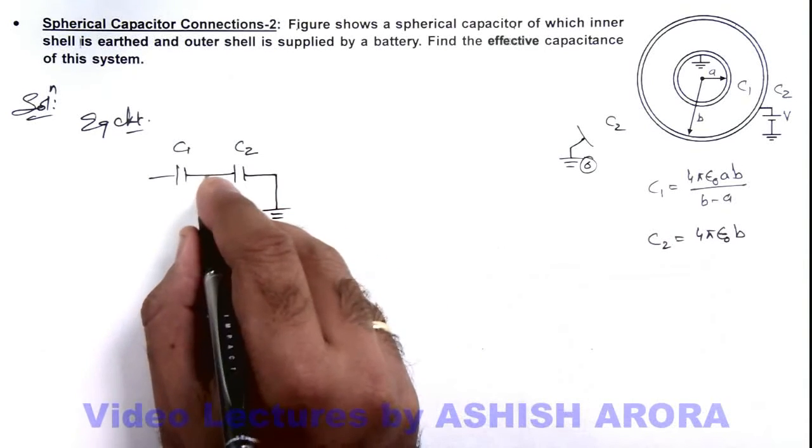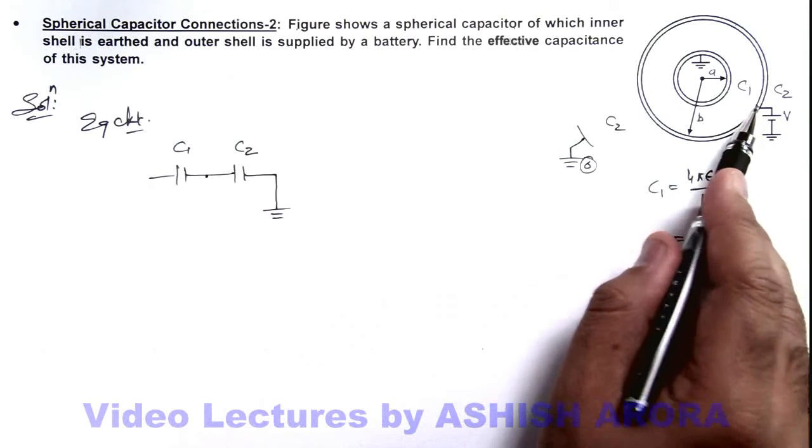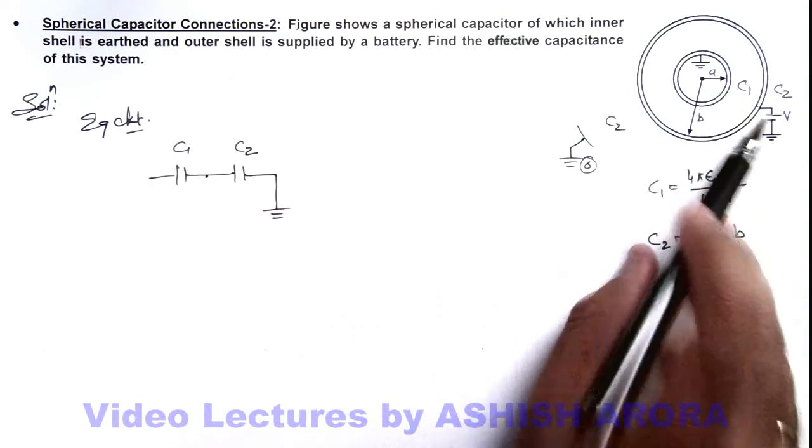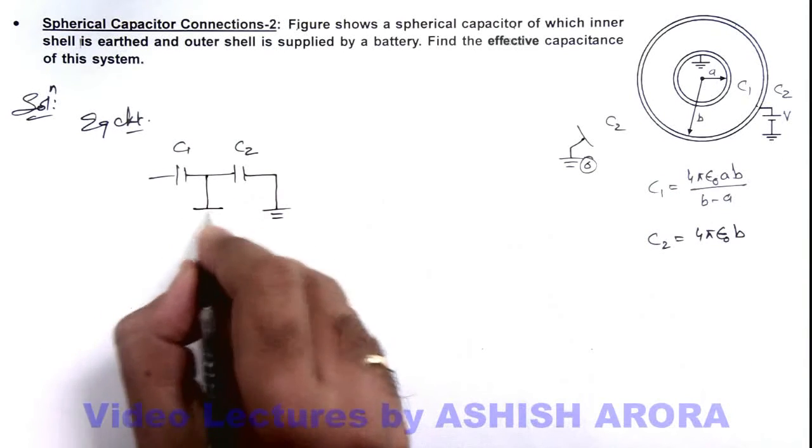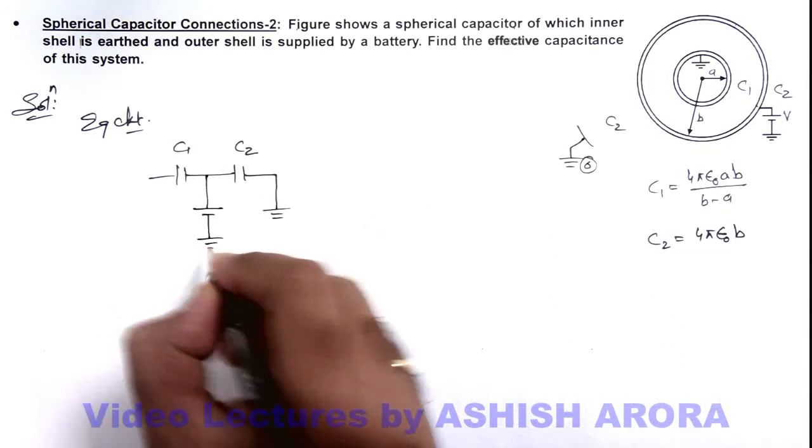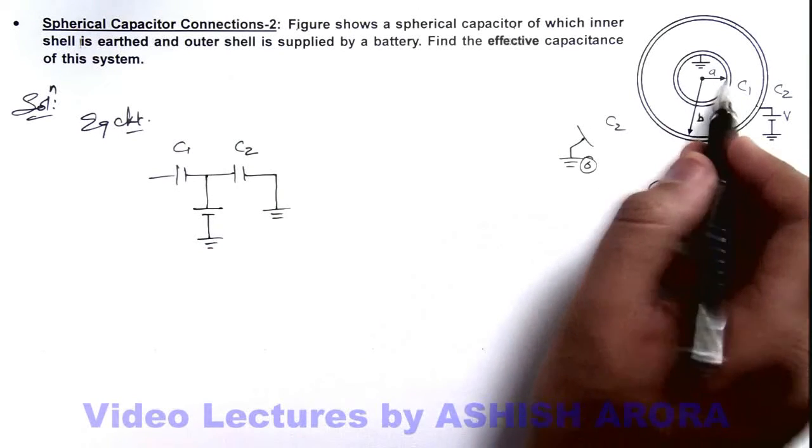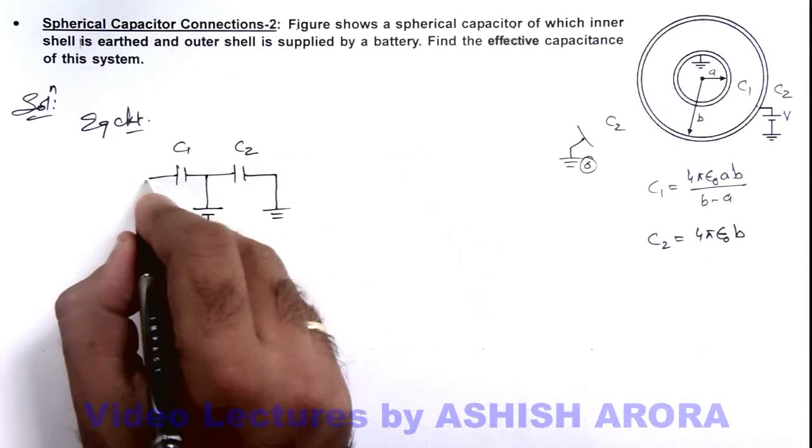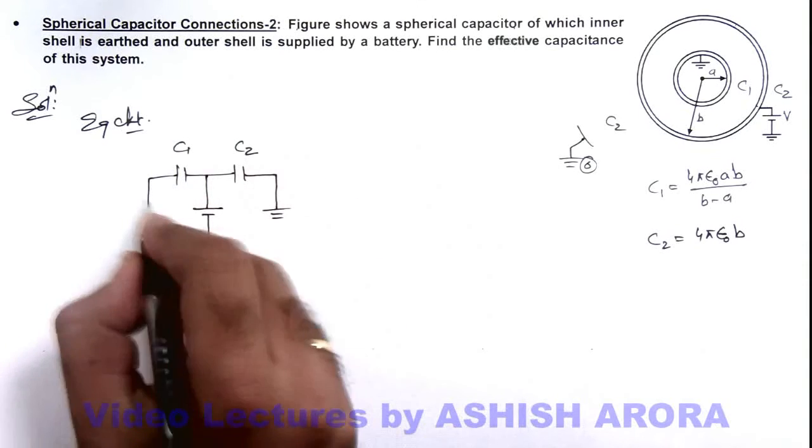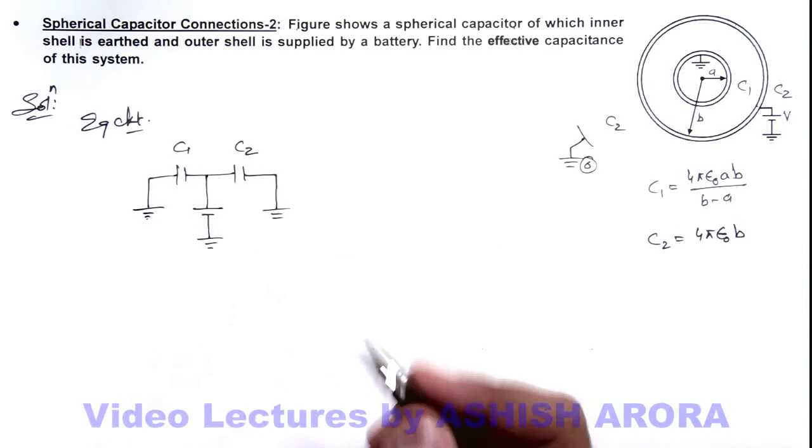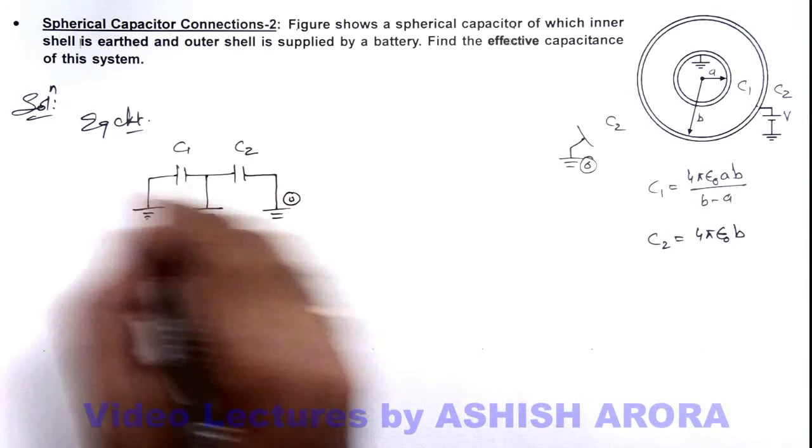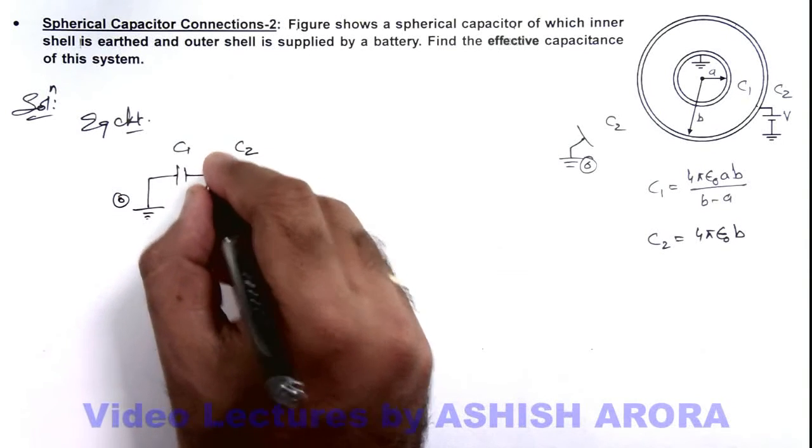And the middle shell, which is the plate between c1 and c2, is connected to a battery which will supply some charge. And the inner plate of c1, the remaining plate of c1, is also connected to earth. So here potential is zero and zero, and the potential at the middle shell will be v.